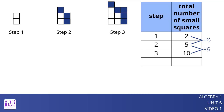It is also not exponential because it is not changing by the same factor each time. From step 1 to step 2, the number of small squares grows by a factor of 5/2, while from step 2 to step 3, it grows by a factor of 2.